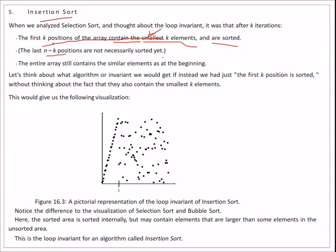The entire array still contains the same elements as at the beginning. If we consider the loop invariant more generally, the first k positions are sorted — without necessarily requiring they contain the smallest k elements. There is a noticeable difference between insertion sort and selection sort: the sorted area is sorted internally but may contain elements that are larger than some elements in the unsorted area.